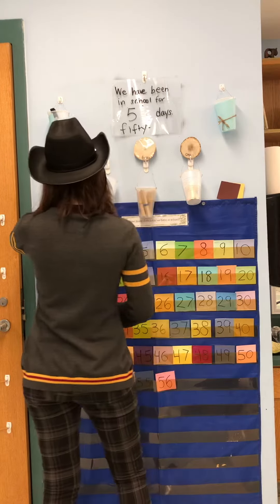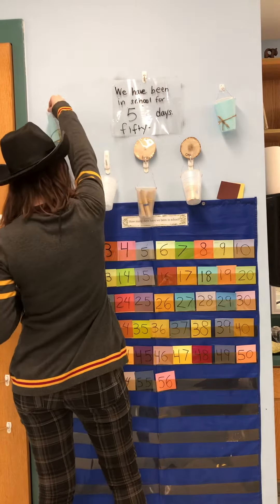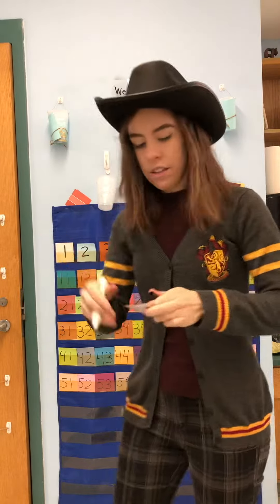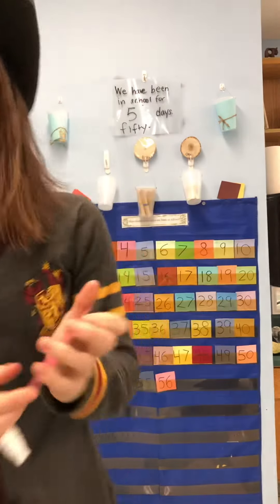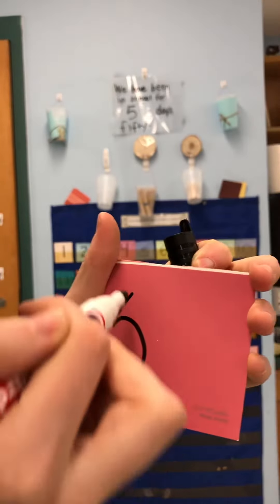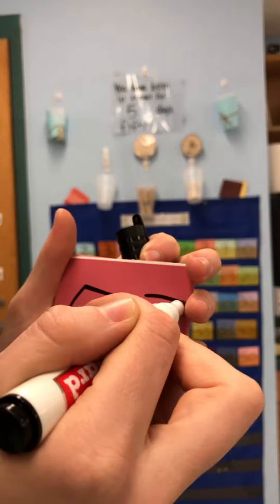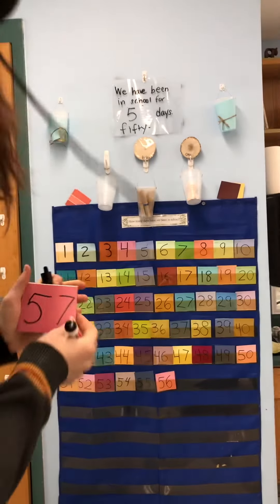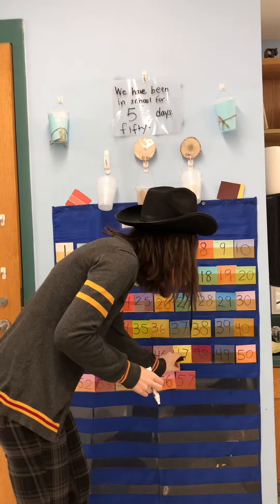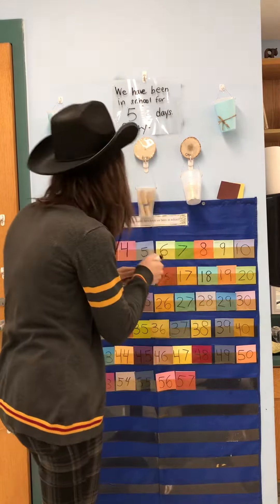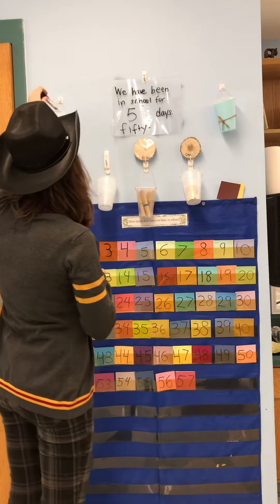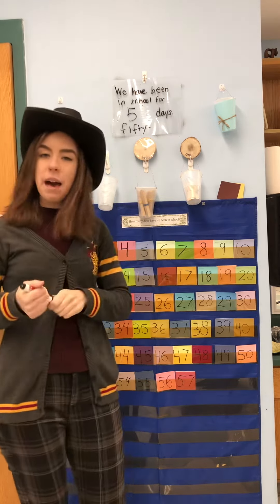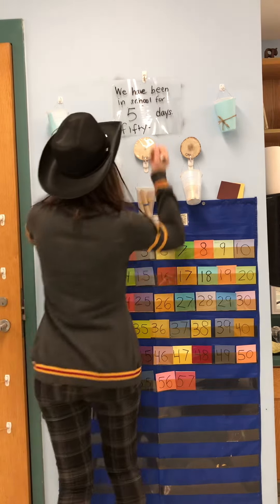So we are going to write a 57 — that's a five and a seven. Fifty-seven. Fifty-six, fifty-seven. Wow, look at us go! If someone asked how many days have you been in school, you could say we have been in school for 57 days.